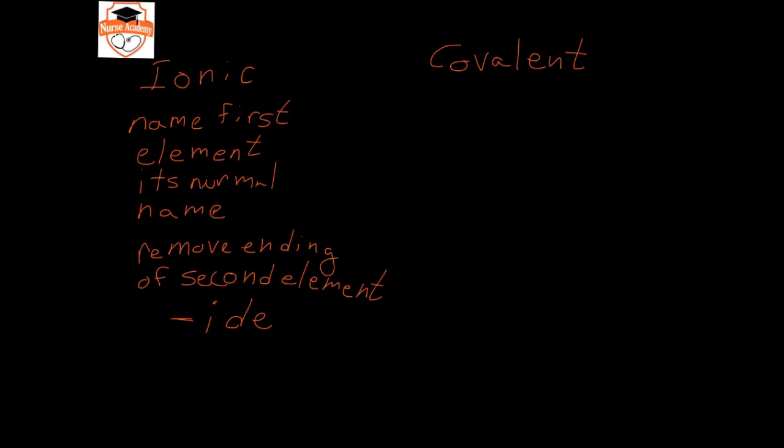In covalent naming, you're going to use prefixes: mono, di, tri, tetra, penta, hexa, and I'm assuming you're probably not going to go above that. Most of the questions that we've seen so far have only required ionic naming, but I wanted to give you the covalent naming just to be safe.